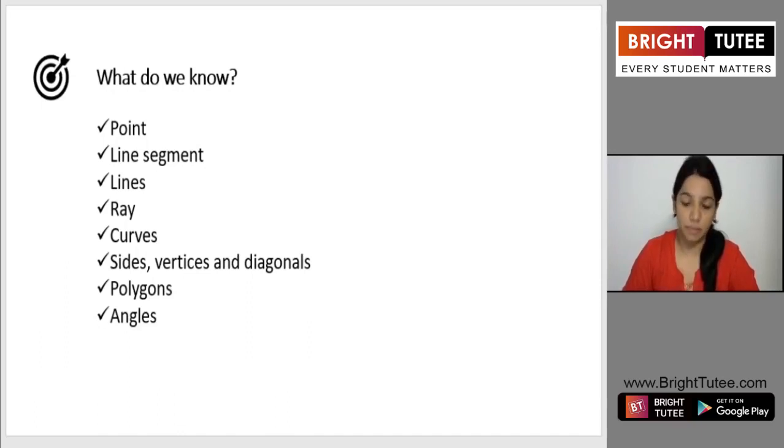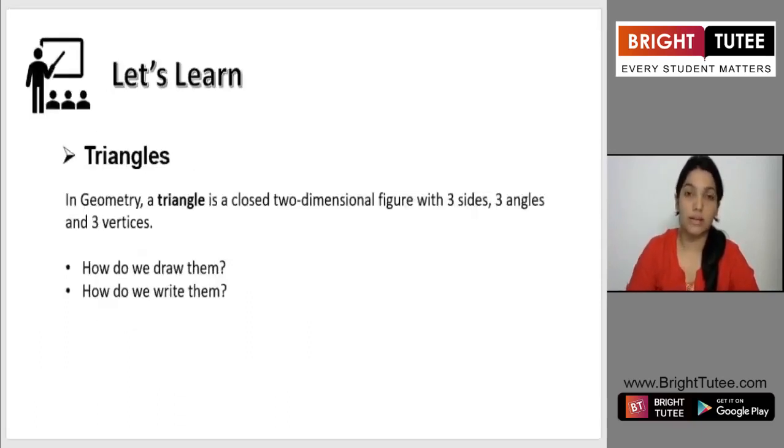...begin this class by starting with triangles. Now how can we define triangles? In geometry, a triangle is a closed two-dimensional figure with three sides, three angles and three vertices. Let us see how we can draw them.